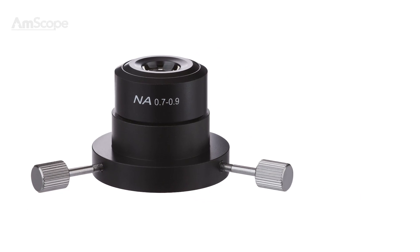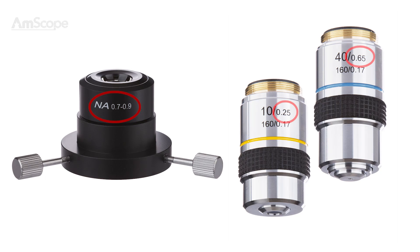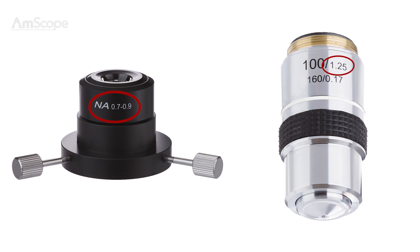When choosing a darkfield condenser, be sure the condenser's numerical aperture is larger than the numerical aperture of the objective lens you plan to use. If the objective lens's aperture is larger than the condenser's, direct light will be transmitted and a dark field will not be achieved.